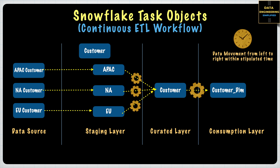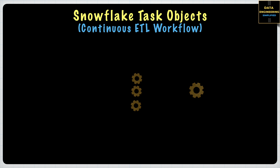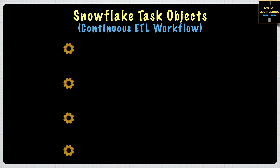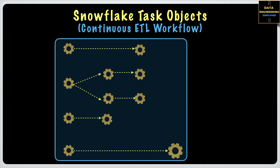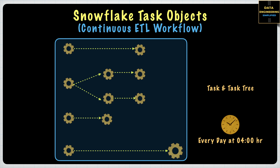Snowflake provides an object called task and task tree which can help build a continuous ETL workflow. A data project can have complex orchestration requirements combining many DML and transformation operations, running complex SQL scripts in parallel or sequentially. Such complex orchestration can be achieved using task and task tree in Snowflake, and it can also be scheduled to run at a certain frequency to meet SLA or data availability for downstream applications.